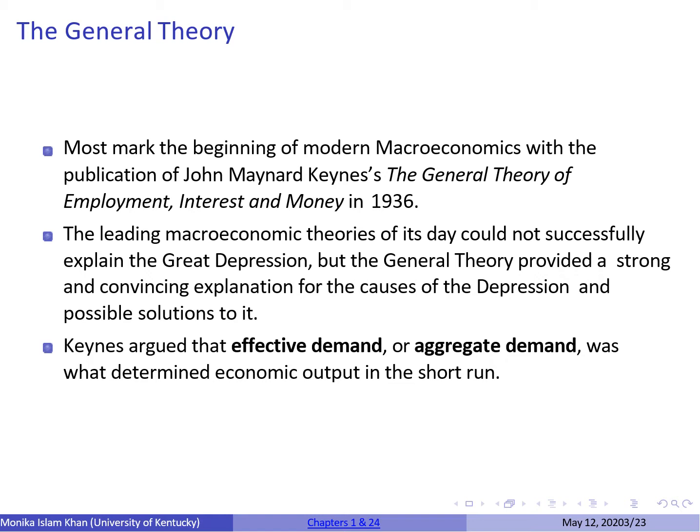A recession or depression is characterized by falling output. Keynes argued that aggregate demand — what he called effective demand — is what determines output in the short run. The Great Depression began with low aggregate demand. Since there was low aggregate demand, firms lost the incentive to produce, leading to low output. Because there was low output, firms no longer needed to employ as many workers, which increased unemployment. Increased unemployment meant low or no incomes, so aggregate demand fell further, causing another fall in output. Basically, the Great Depression was a vicious cycle of falling aggregate demand and falling output.